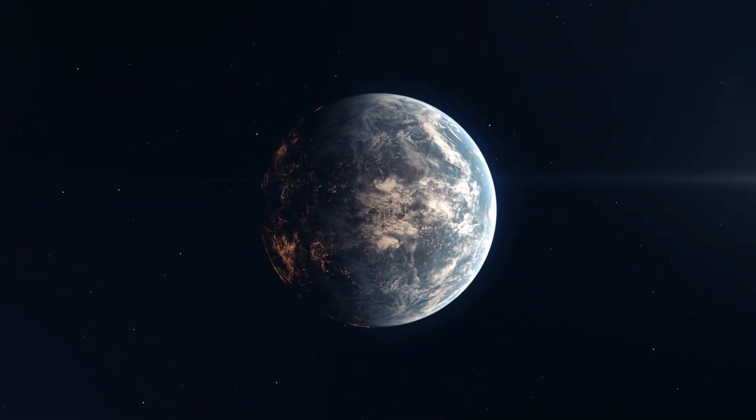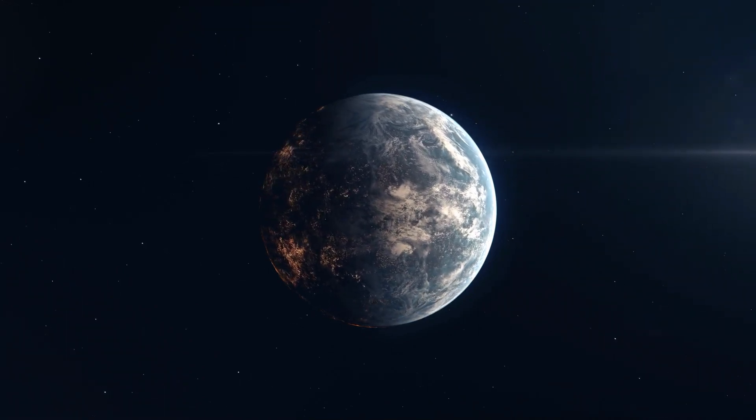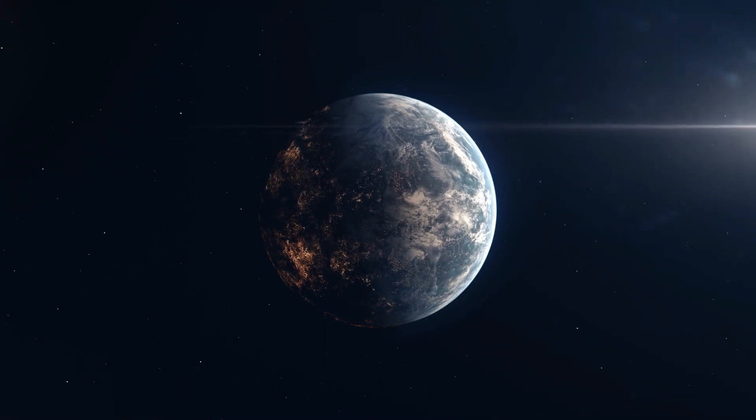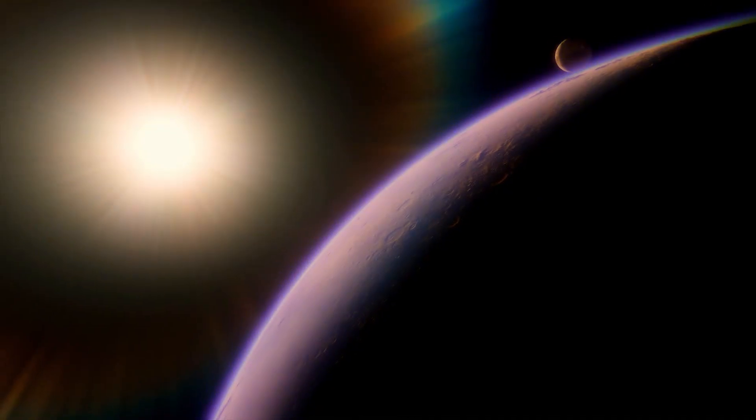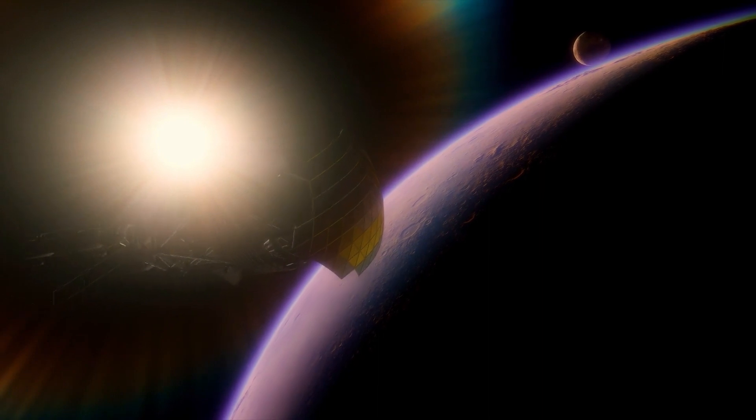You might believe that all you need to find exoplanets is a telescope, but that is not the case. In fact, seeing an exoplanet is as rare as seeing Saturn from Earth. Luckily, there is a method of identifying planets known as direct imaging, and very few exoplanets have been discovered this way.